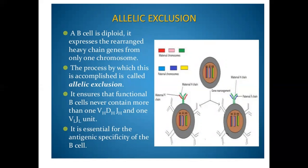The process by which this is accomplished is called allelic exclusion. It ensures the functional B cell never contains more than one V, D, J, and heavy and light chain. Only one heavy chain and only one light chain should be present. This is essential for the antigenic specificity of the B cell. The B cell has chromosomes from both maternal and paternal sources, but only one will be expressed — either maternal or paternal. That is allelic exclusion.